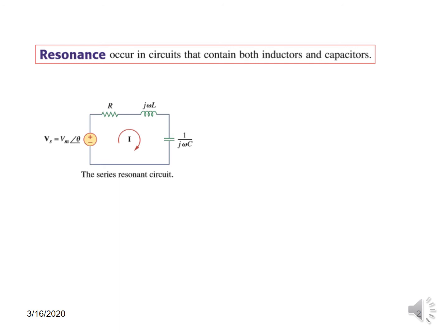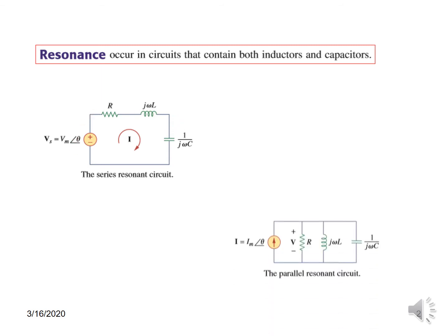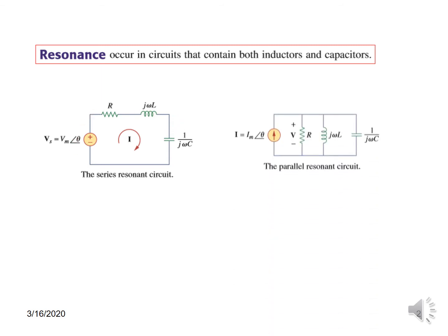One is called the series resonance circuit, where the same current flows through all elements. Then we have a parallel resonance circuit. These are the two main categories, but there is another one that is a combination of the two, which is called the series-parallel circuit.